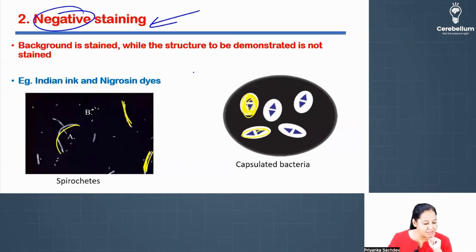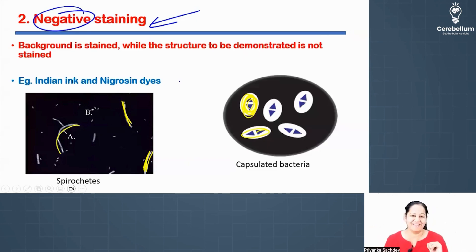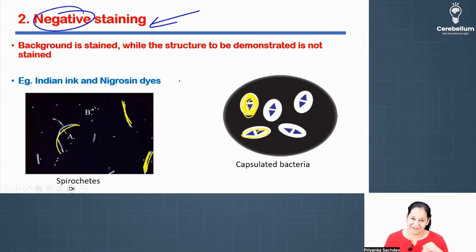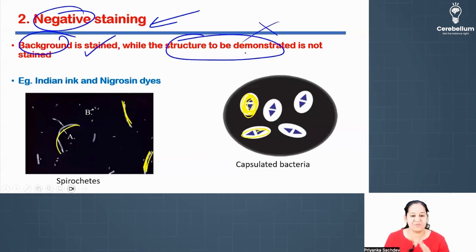Negative stain is not the same as wet preparation. In wet preparation, we are not staining at all — neither background nor bacteria. In negative stain, we are doing staining, but we are staining the background, not the bacteria. So there is a difference. The background is stained, but the structure to be demonstrated is not stained.